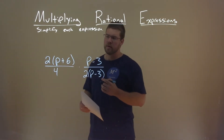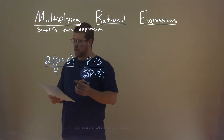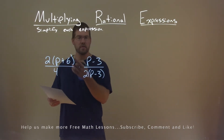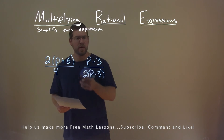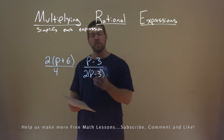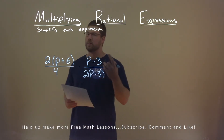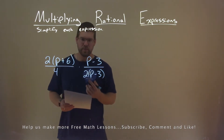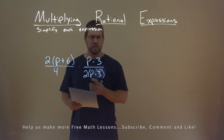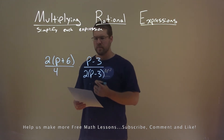We're given this problem right here: 2 times p plus 6, divided by 4, times p minus 3, divided by 2 times p minus 3, and we need to simplify this expression.